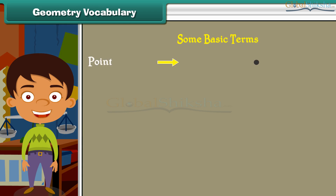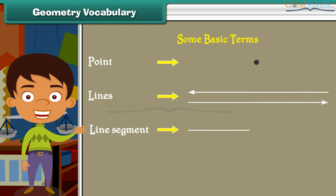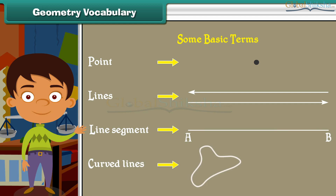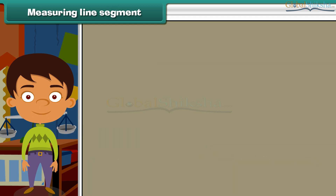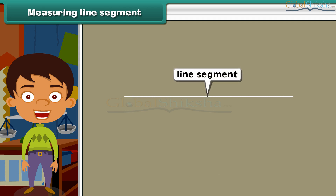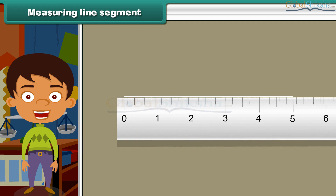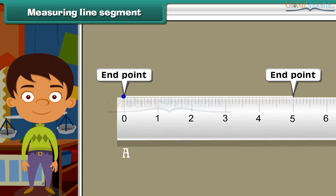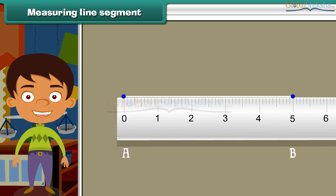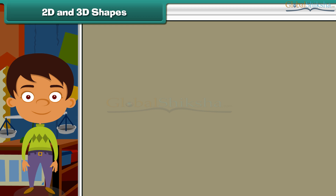Some basic geometry terms: a point is an imaginary dot. A line is straight and extends in both directions. A line segment is part of a line — for example, AB is a line segment. To measure line segment AB, use a centimeter scale starting at zero below point A; traveling from A to B covers digits 0 through 5, so the length is five centimeters.